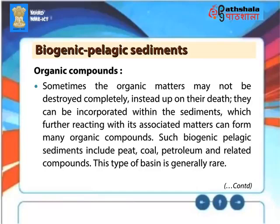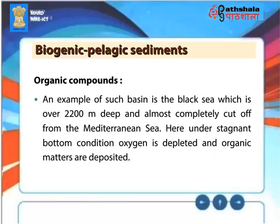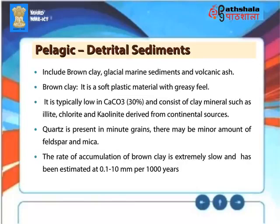Sometimes organic matter may not be destroyed completely; instead, upon death, it can be incorporated within the sediments, which further reacting with associated matter can form many organic compounds. Such biogenic pelagic sediments include peat, coal, petroleum, and related compounds. This type of basin is generally rare. An example is the Black Sea, which is over 2,200 meters deep and almost completely cut off from the Mediterranean Sea. Here, under stagnant bottom conditions, oxygen is depleted and organic matter is deposited. Pelagic detrital sediments include brown clay, glacial marine sediments, and volcanic ash.